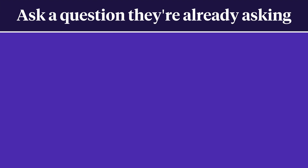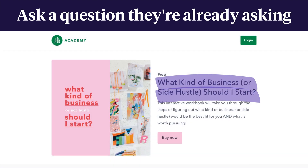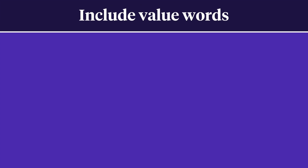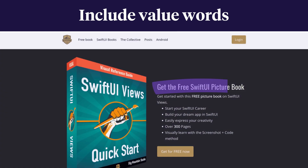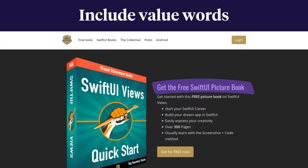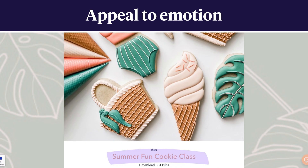Your headline is the first thing most people will read once they land on your page. Its purpose is to convince people to pause for a moment and take in the rest of your CTA. Use some or all of the following techniques: ask a question that they're already asking, like 'What kind of business or side hustle should I start?'; include value words that imply saving or earning time or money or audience growth, like 'Get the free SwiftUI picture book'; or appeal to emotion, like 'Summer fun cookie class.'